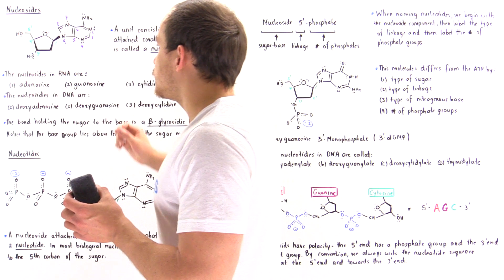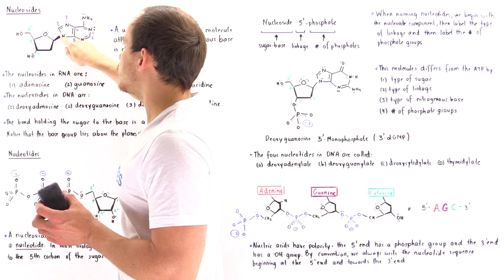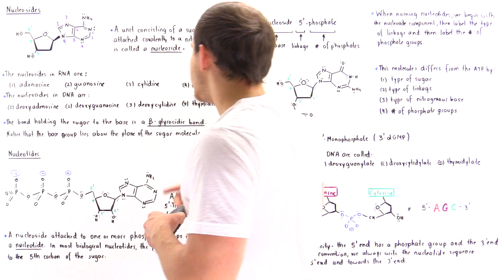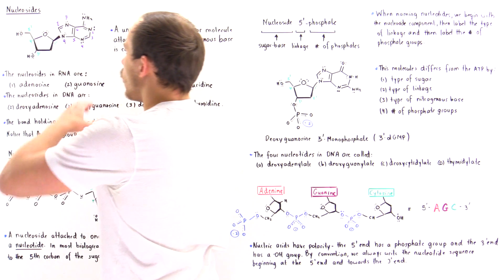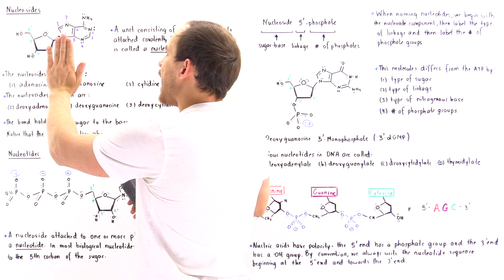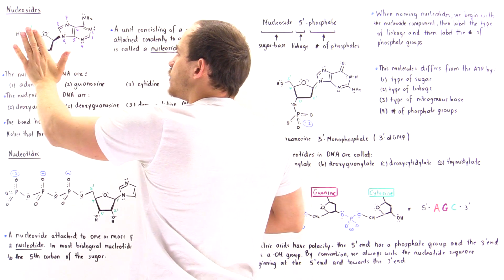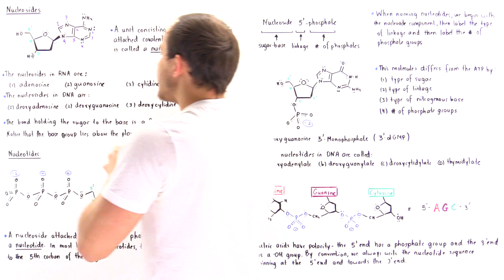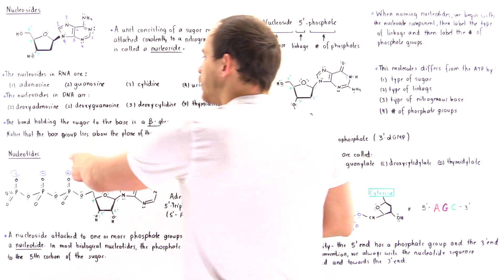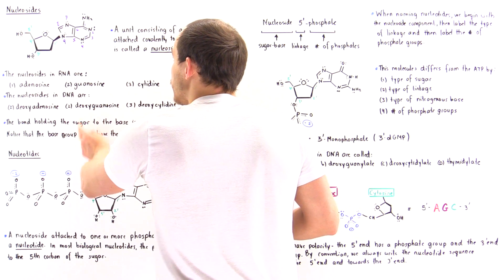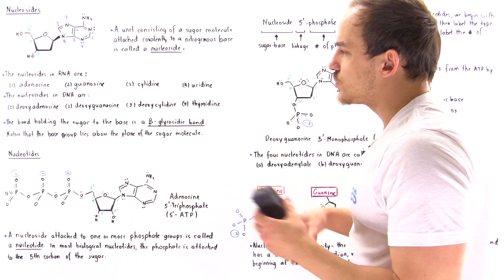Notice that the linkage between the carbon found on the sugar and the nitrogen found on our base is the beta-glycosidic linkage. This bond is also coming out of the board, and what that means is if this sugar molecule was found on the plane of the board, this entire base will be found above the plane of that sugar. So the base group — in this case adenine — lies above the plane of the sugar molecule.